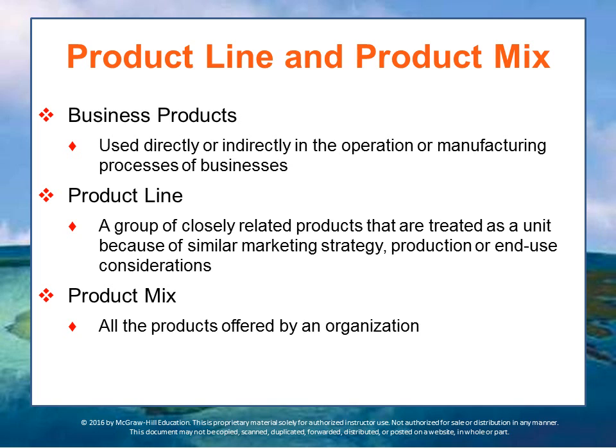Component parts are finished items ready to be assembled into final products. Processed materials are used directly in production or manufacturing but are not identified as component parts. Supplies include materials used for operations such as pencils and paper. Industrial services include financial, legal, security, and janitorial services, provided internally or from an outside supplier.